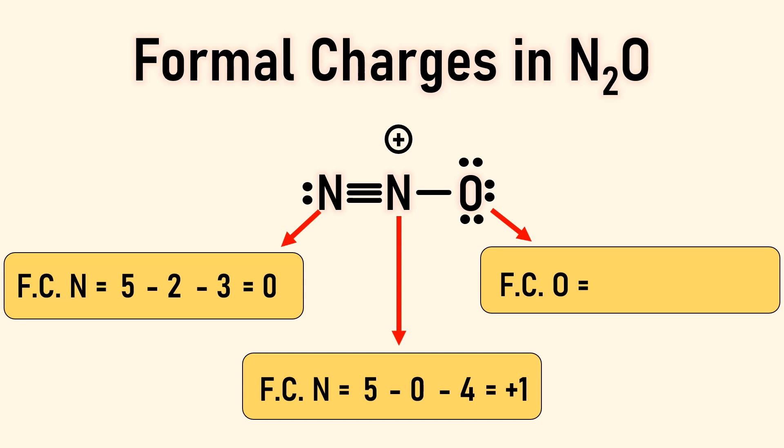And finally for the oxygen. We'll start with oxygen's six valence electrons, then subtract six for the non-bonding electrons. Then subtract one shared electron for the one covalent bond. This gives us a formal charge of minus one.